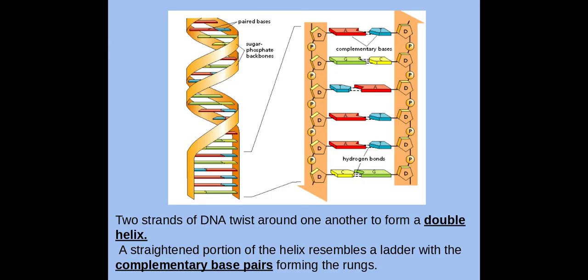And wherever I've got T, I'll always have A. So this will mean, for example, if I have 33% of T bases, I will also have 33% of A bases.